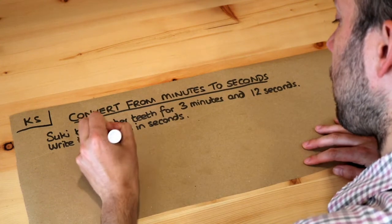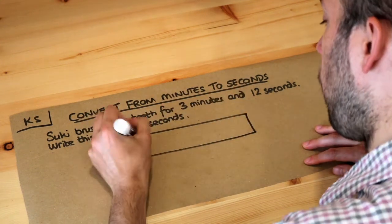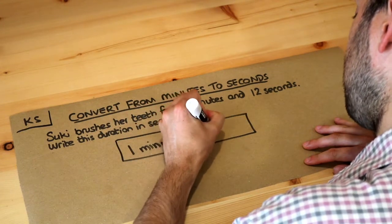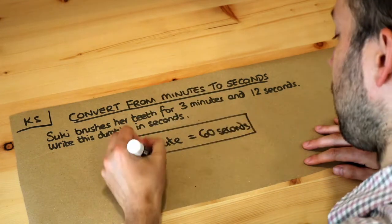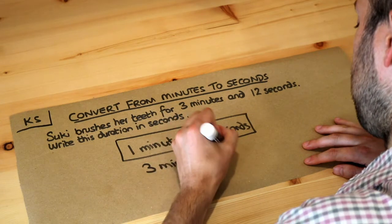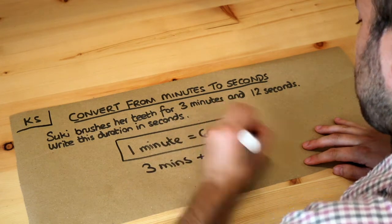Now all you need to know is that 1 minute is the same as 60 seconds. So if we write this 3 minutes, or mins for short, plus the 12 seconds, or secs for short.